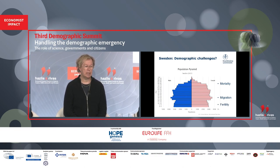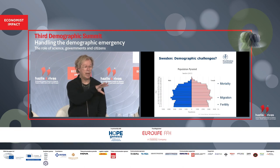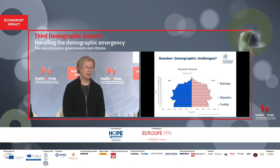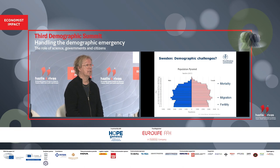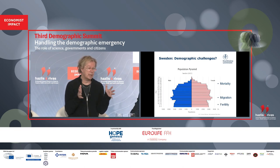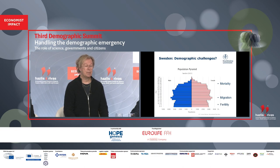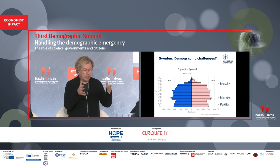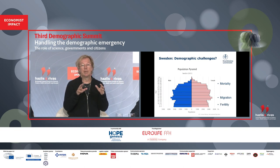This is the population age structure of Sweden, where I'm coming from. Women and men in suitable colors from age zero at the bottom, all the way up to the top where people start to die off at the very highest ages. The very decisive factor to create this population age structure is fertility. It's a relatively balanced population age structure, due to fertility that has been close to replacement levels for almost 100 years.